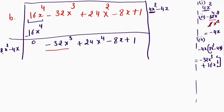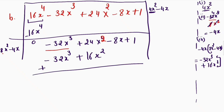Now I will multiply negative 4x with the divisor 8x² minus 4x. This gives me negative 32x³ plus 16x². I write this here, then change the signs — plus becomes negative and negative becomes positive — so they cancel. My remainder is now 8x² minus 8x plus 1.